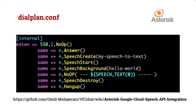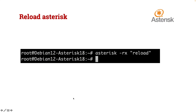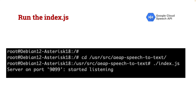That's how the setup is done. There's still one important step: running the index.js application. Go to the GitHub source code you downloaded and run index.js so the application starts listening on the port and connects to Google Cloud. This must be done before testing.